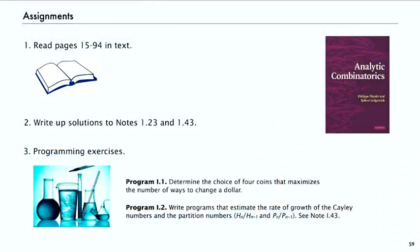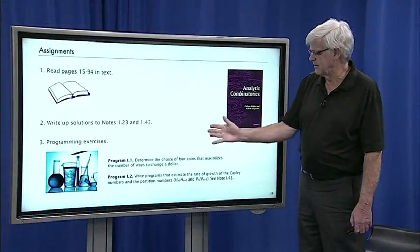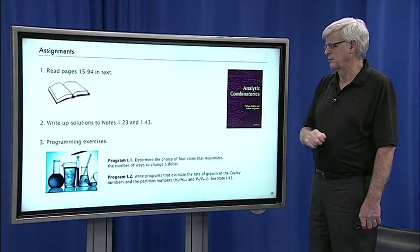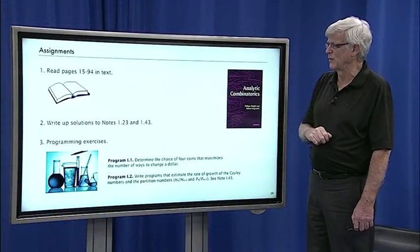And another interesting program: the solution to that exercise gives a way to estimate the rate of growth of the Cayley numbers or the partition numbers by just taking the ratio of h sub n over h sub n minus 1 and p sub n over p sub n minus 1. And so, it's easy to write programs to do that and that's a worthwhile exercise.